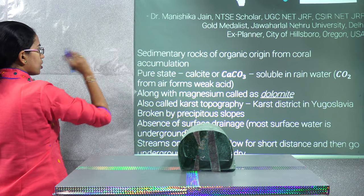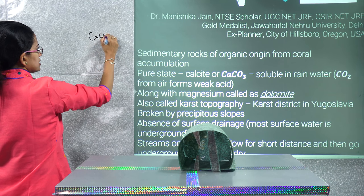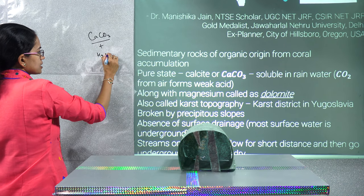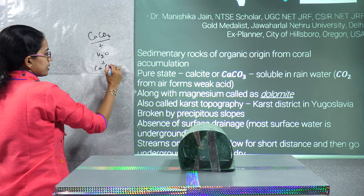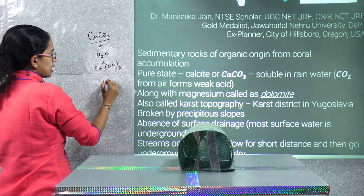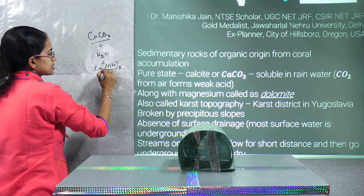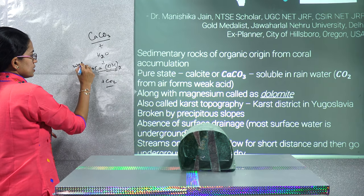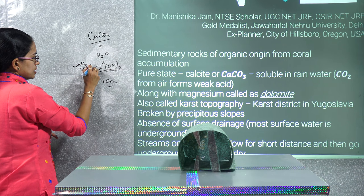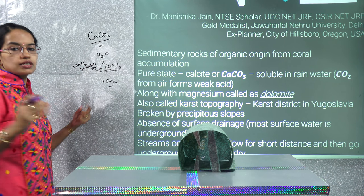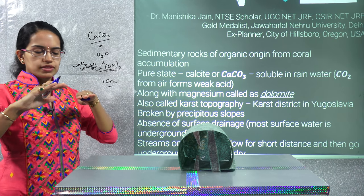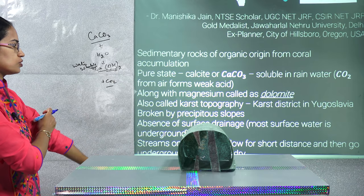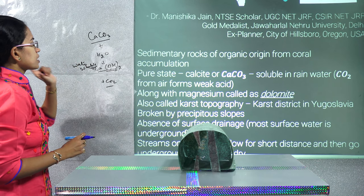In a pure limestone topography, limestone is found as calcium carbonate. When calcium carbonate reacts with water, it forms calcium hydroxide and releases carbon dioxide. Calcium hydroxide is water soluble, so the dissolution or action of water takes place very quickly in limestone topographies.